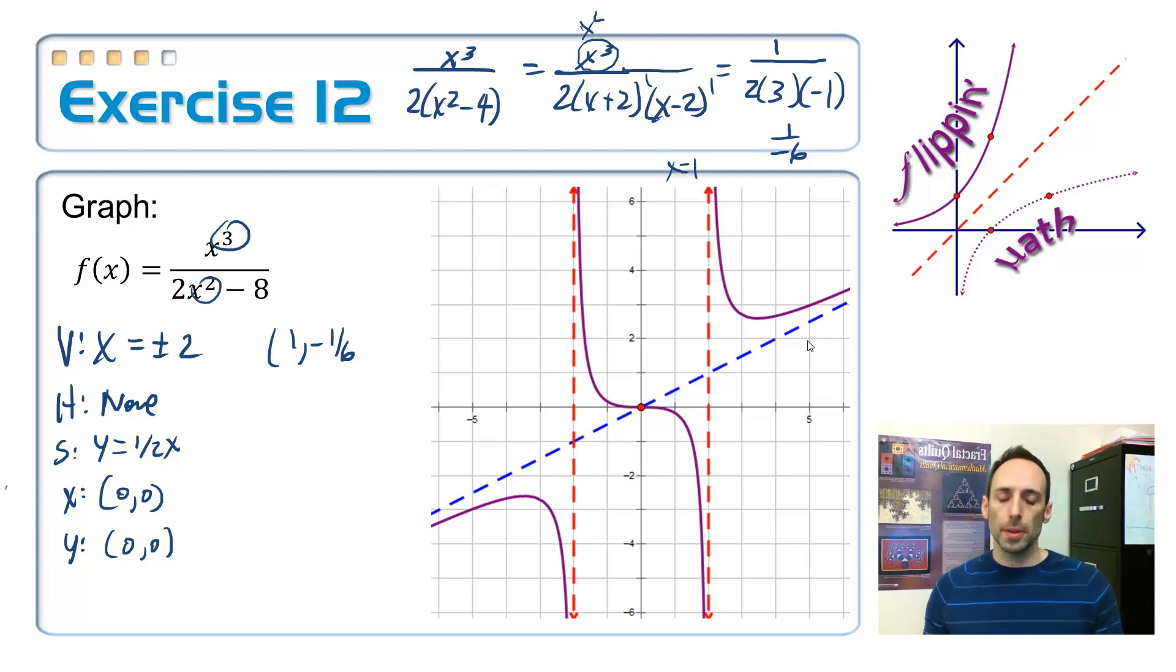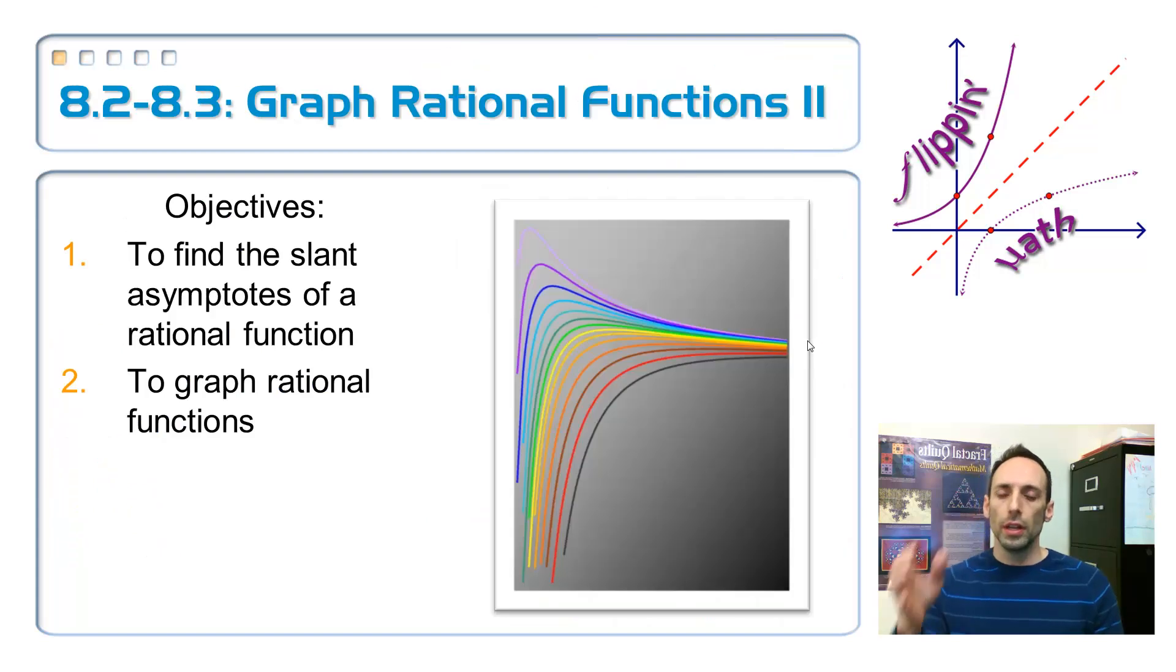That pretty much finishes up this lesson, this lesson on being able to find a slant asymptote of a rational function. I know I have a slant asymptote if the degree of the top is one more than the degree of the bottom, and being able to put all of the pieces together, all the asymptotes, all the x-intercepts and the y-intercepts, putting them all together to make the graph of the rational function. And, there's like a rainbow with an asymptote on it for you, just because.